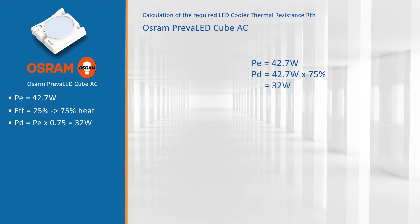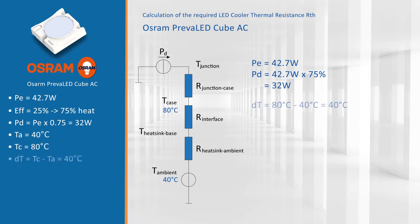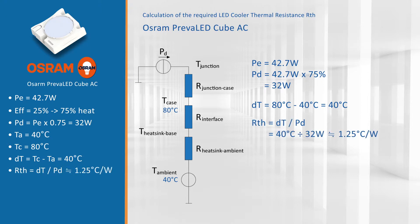Since we are going to design a downlight with it, we estimate that the ambient temperature is slightly higher — around 40 degrees Celsius. And we have to keep our case temperature or measurement point below 80 degrees. So we have a temperature gap of 40 degrees Celsius we can play with. When we divide this 40 degrees Celsius by the dissipated power of 32 watts, then we get the thermal resistance of the whole package, which is 1.25 degrees Celsius per watt.